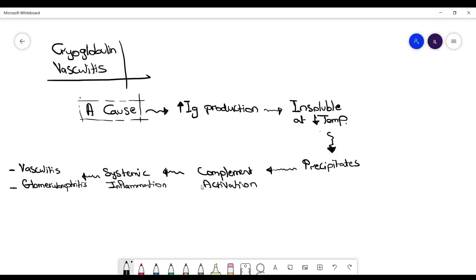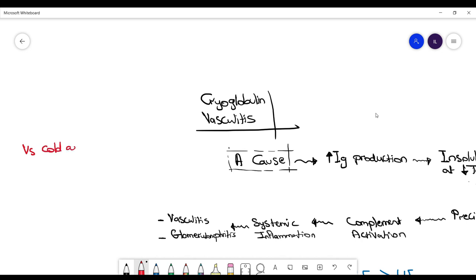You need to differentiate it from cold agglutinin, which also causes IgM overproduction that precipitates at low temperature. Instead of causing complement activation, it causes hemolytic anemia.